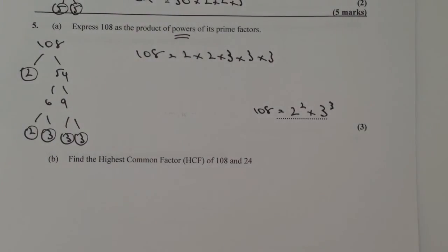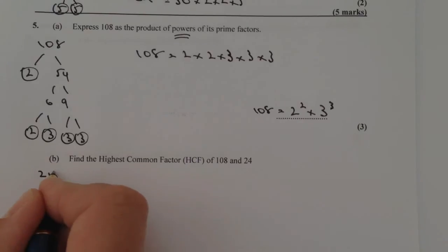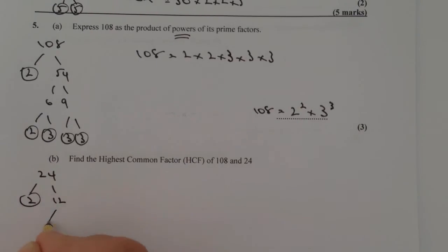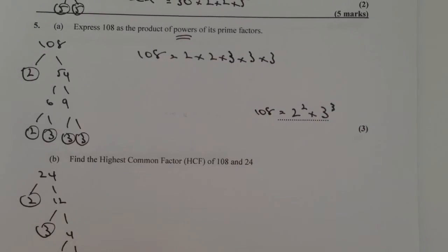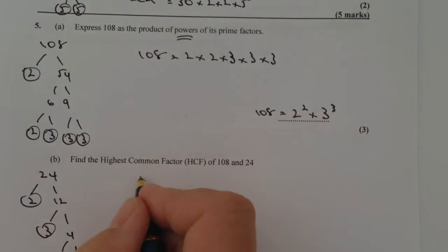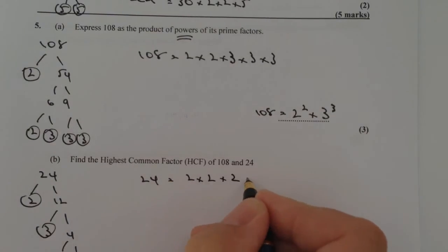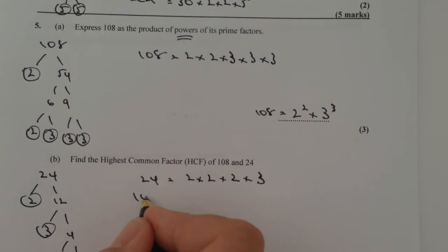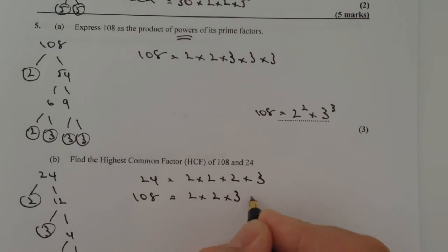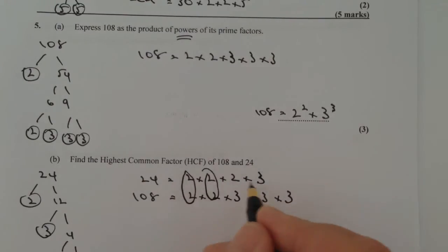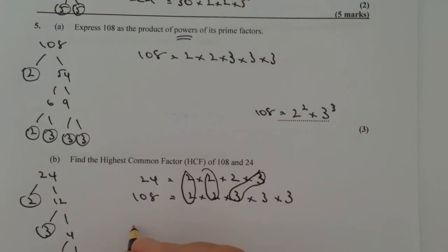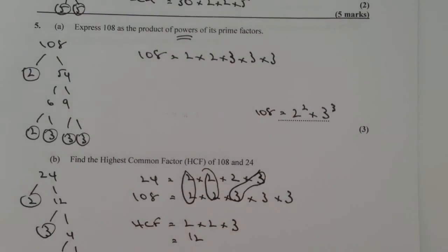For the additional mark, we need the HCF of 108 and 24. Working out 24: it splits into 2 and 12; 12 gives 3 and 4; 4 gives 2 and 2. So 24 equals 2 times 2 times 2 times 3, and 108 equals 2 times 2 times 3 times 3 times 3. The common factors are two 2s and one 3, so the HCF equals 2 times 2 times 3, which is 12.